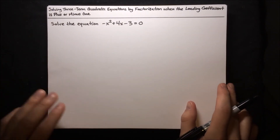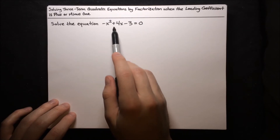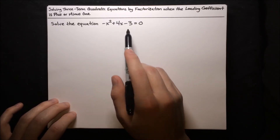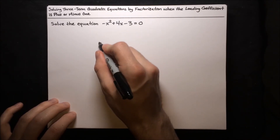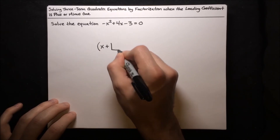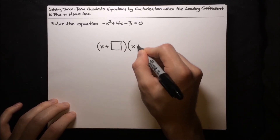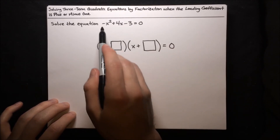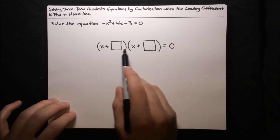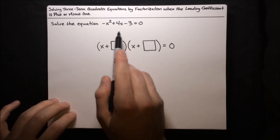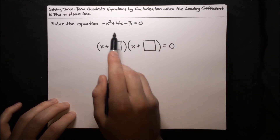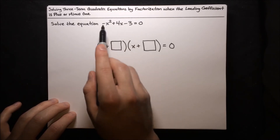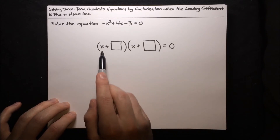Here's another problem. We want to solve the equation negative x squared plus 4x minus 3 equals 0. We're going to use factorization again, factoring the left-hand side into x plus some number times x plus another number. But there's one issue: the negative in front of x squared. These factors can't multiply to form this expression because x times x makes positive x squared, not negative x squared. So we're at a bit of a barrier — how do we get this into a form that can be factored?